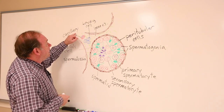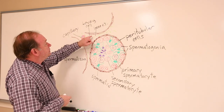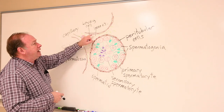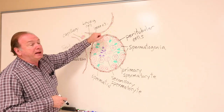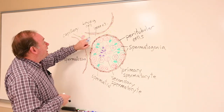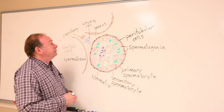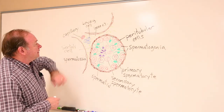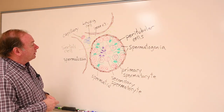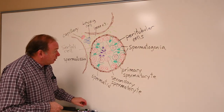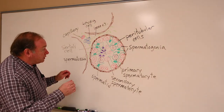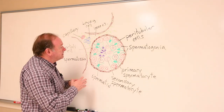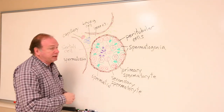The interstitial tissues have capillaries and loose connective tissue. There would be fibroblasts and collagen fibers making up that loose connective tissue. And then they have testosterone-producing cells, the Leydig cells — L-E-Y-D-I-G — the Leydig cells. So that's a look at what you have inside of the testis.